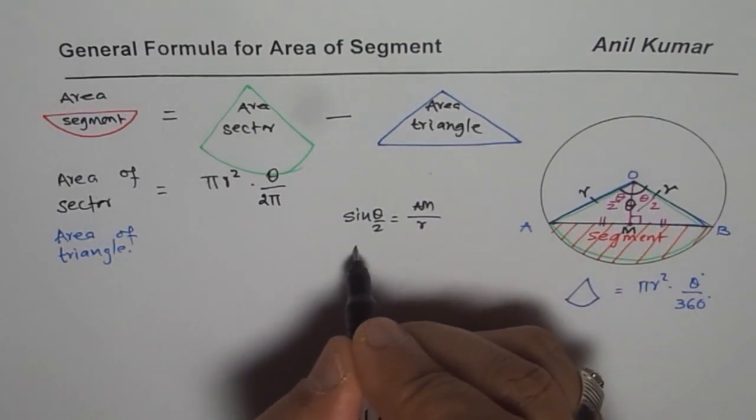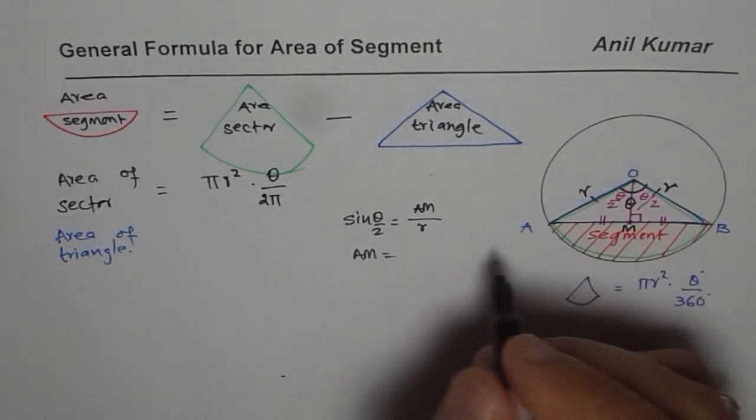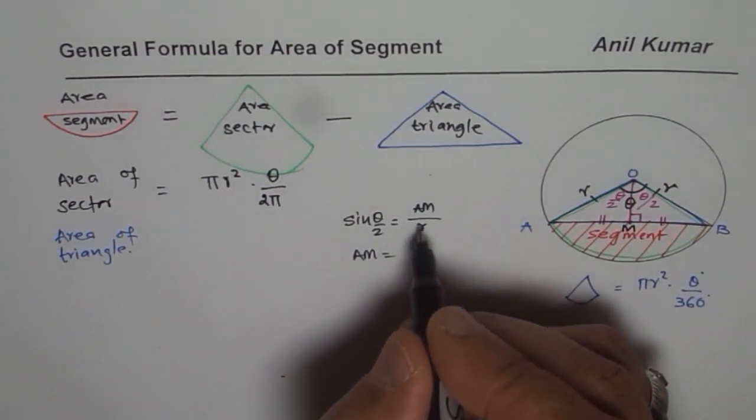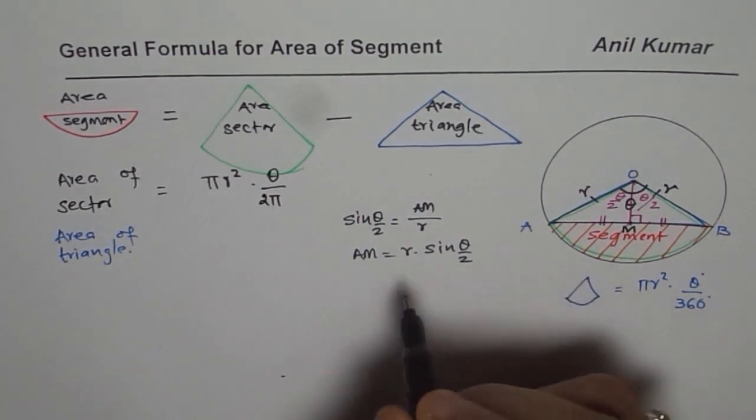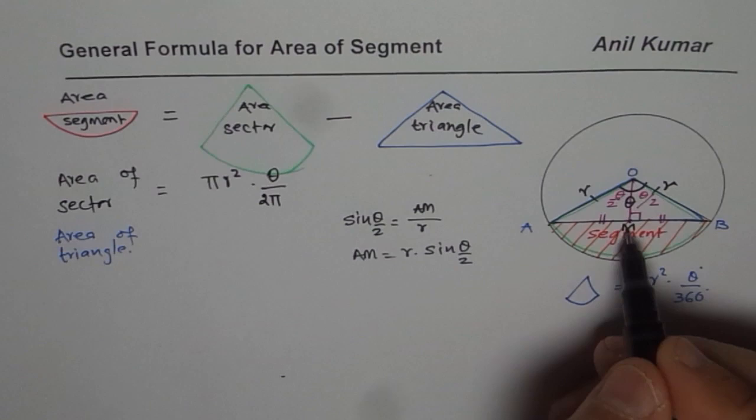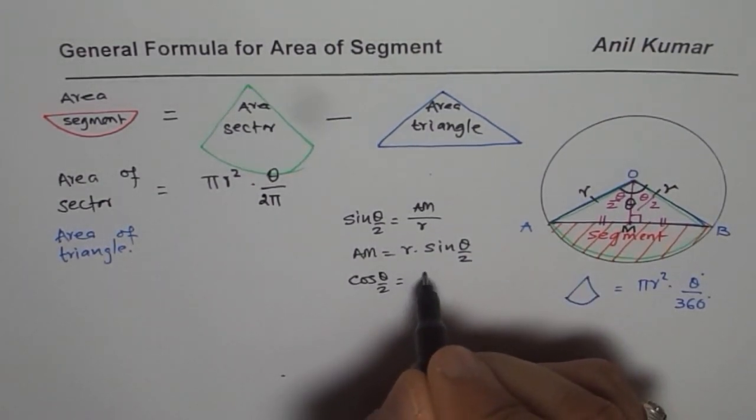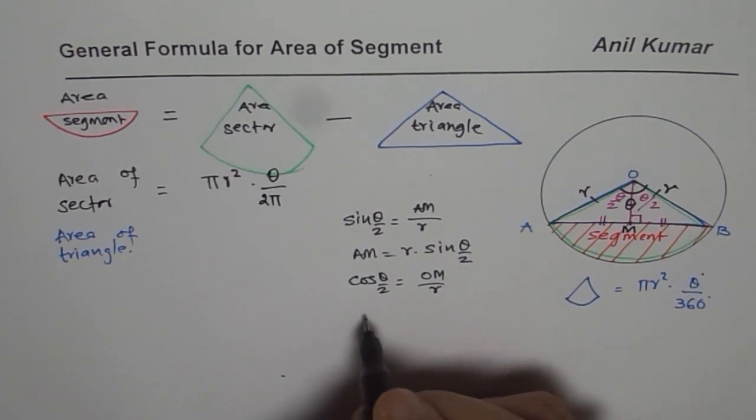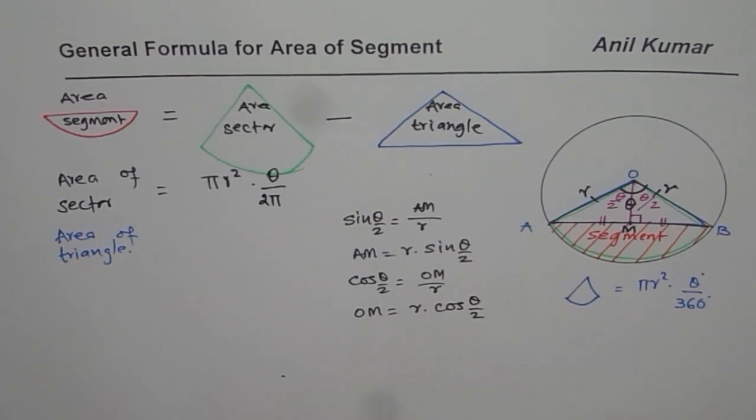So we can say am, which is half of the base, is equal to r times sine theta by 2. And we can find what om is from cos theta by 2. Cos theta by 2 is om by r. Or om equals to r times cos theta by 2.